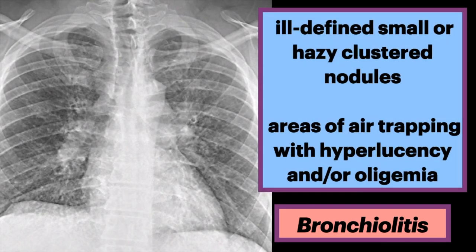Bronchiolitis is usually not detected at chest radiography, but may manifest with nonspecific findings such as ill-defined small or hazy clustered nodules, or areas of air trapping characterized by hyperlucency and/or oligemia. For example, this frontal chest radiograph of a patient with infectious bronchiolitis shows subtle reticulonodular basilar opacities. There is no lobar consolidation or pleural effusion.